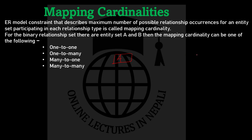Suppose A is one entity set and B is another entity set, represented by rectangular boxes, and the relation between them is represented by a diamond box. On the basis of mapping cardinality, a relationship can be: one-to-one, one-to-many, many-to-one, or many-to-many — four categories.